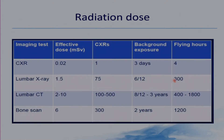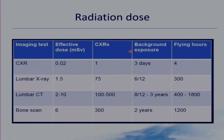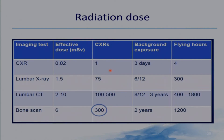One factor to consider when choosing a radiological investigation is the radiation dose. To determine the radiation burden, we compare it with the dose of a chest X-ray. A lumbar X-ray is equivalent to 75 chest X-rays, and a lumbar CT is up to 500 chest X-rays — quite a high dose. A bone scan is around 300 chest X-rays, and a PET scan is much higher.